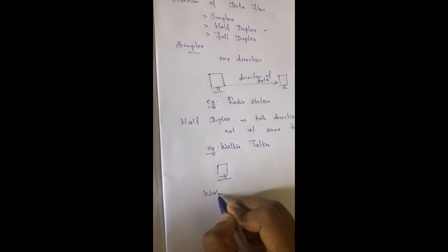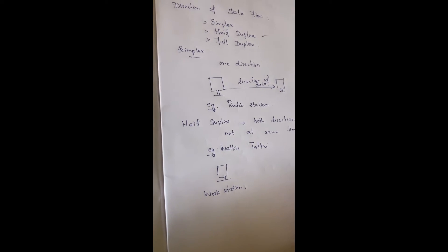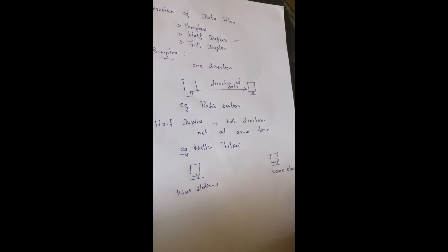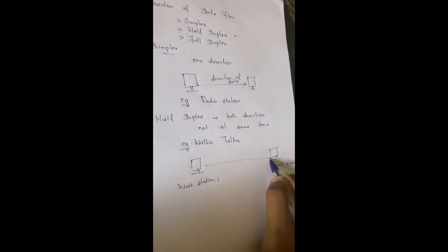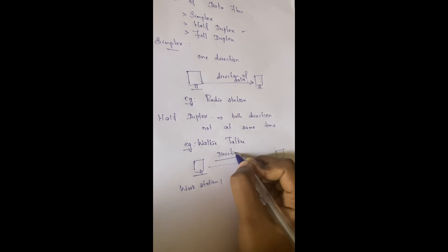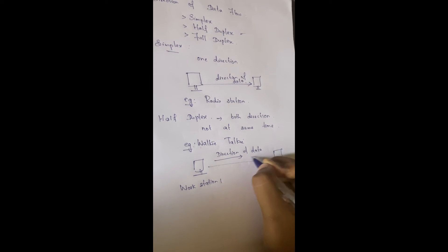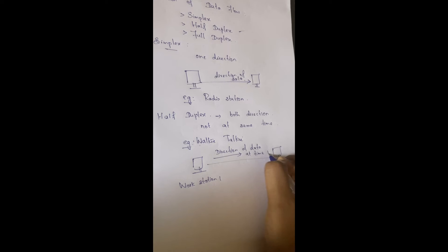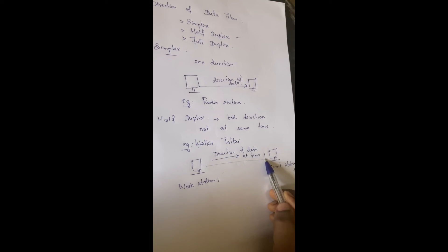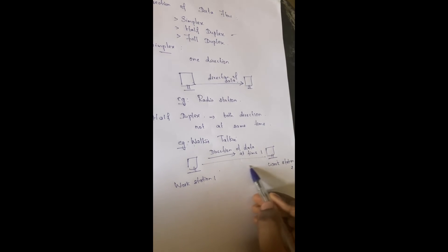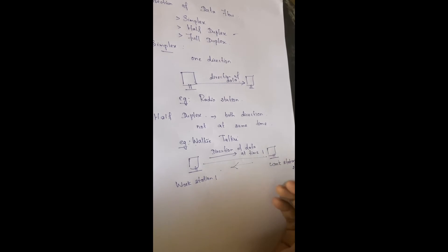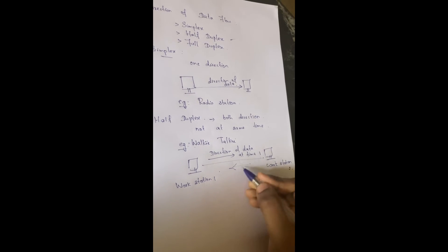If workstation 1 is transmitting data at time one, workstation 2 cannot transmit a reply at that same time — workstation 2 should send data at some other time. So at the same time they cannot transmit information, but at different times both devices can transmit or receive data.